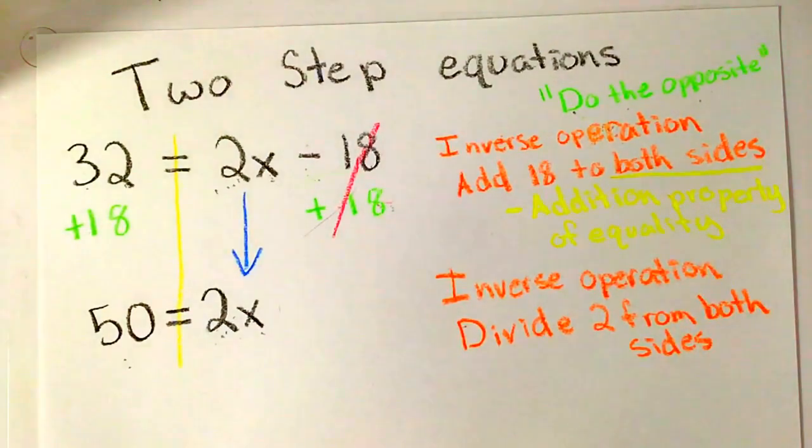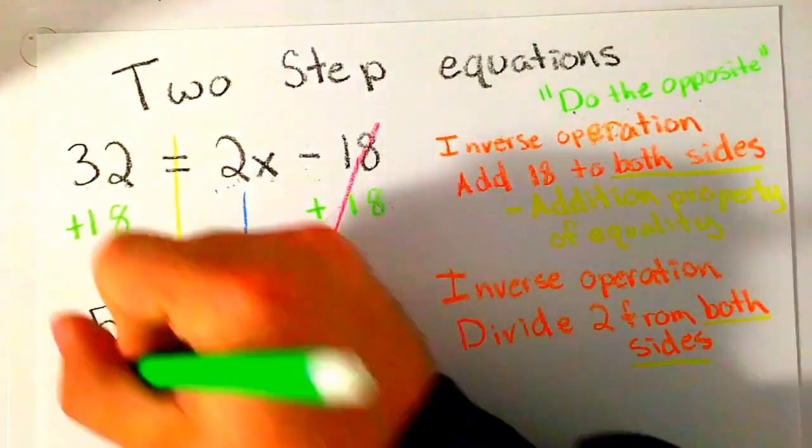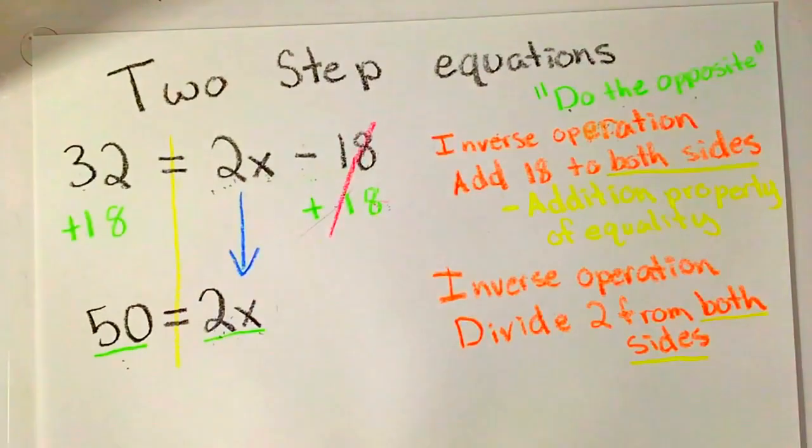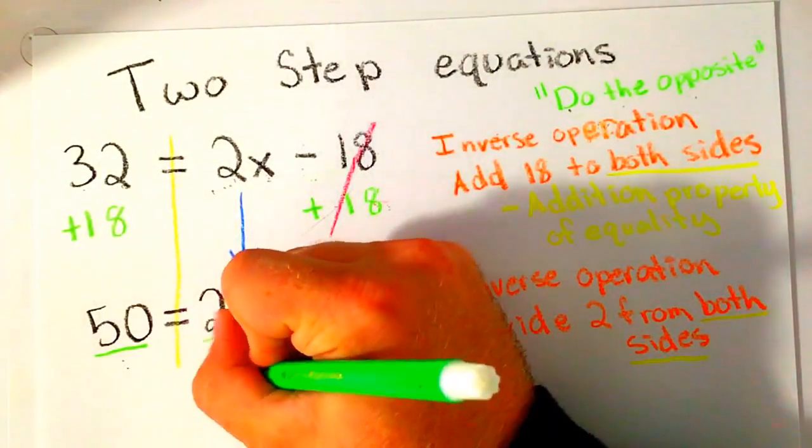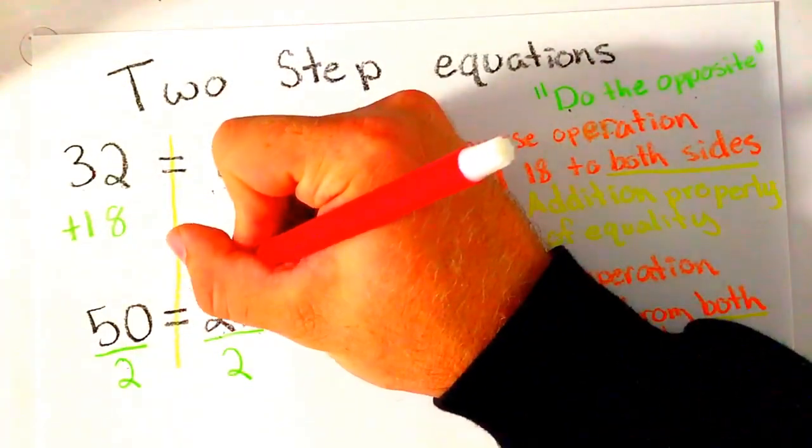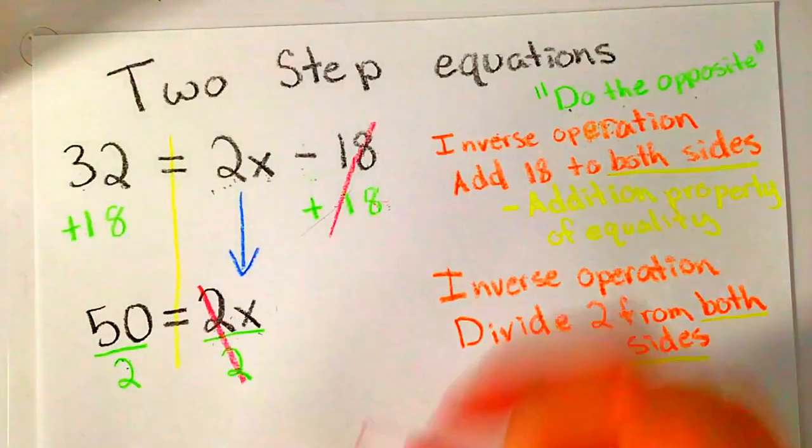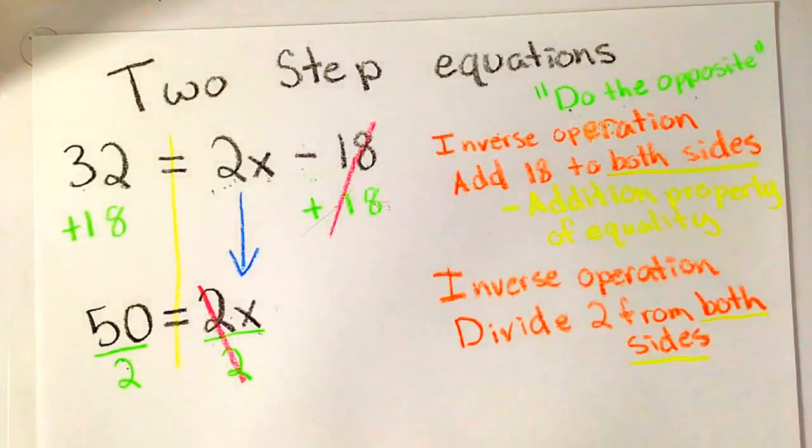Remember, both sides means both sides of the equation. On both sides of the equal sign, we divide by 2. On the right side, this will cancel out. Why? Because 2 divided by 2 is 1, and 1 times any number doesn't change that number.